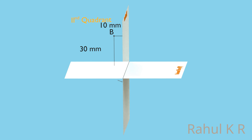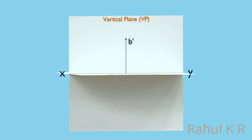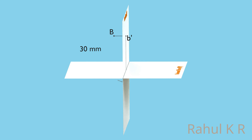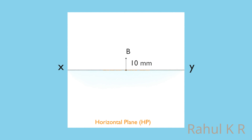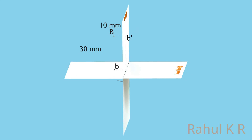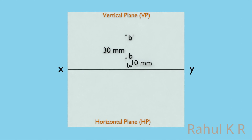As always, the front view is obtained by looking from this direction. Since the projection planes are transparent, we can see the front view of the point B in the vertical plane. The front view is denoted by small letter B dash. Alternatively, the front view can also be obtained by extending the visual ray perpendicular to VP from point B. The top view is obtained on HP by looking from this direction and is denoted by small letter B. It can also be obtained by extending a visual ray from point B to the horizontal plane. When we rotate the horizontal plane clockwise 90 degrees and view from the front, this is the projection of the given point B. Note that since the point is in the second quadrant, both front view and top view are above the XY line.